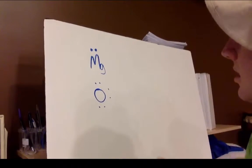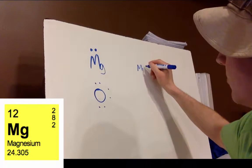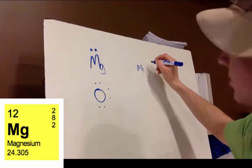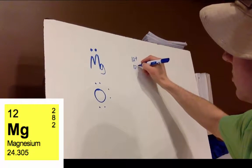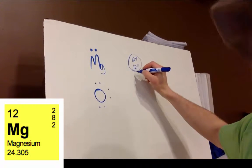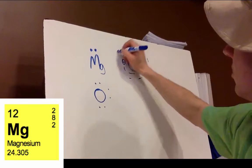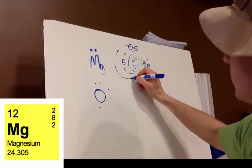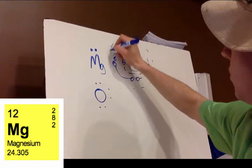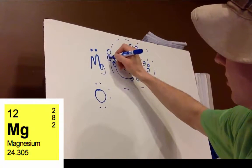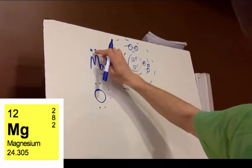If we look at magnesium's full Bohr model: magnesium has 12 protons and 12 neutrons in its nucleus — 12 positive charges and 12 neutral charges. Its inner shell has two electrons, the next shell holds eight electrons, and then it has two more. Those two outer electrons on the valence shell are the ones we represent in the Lewis dot structure.